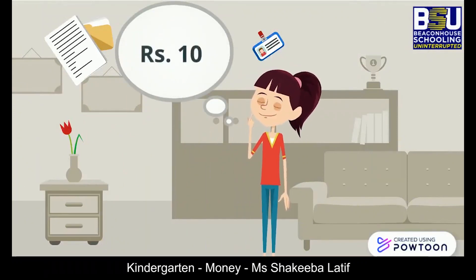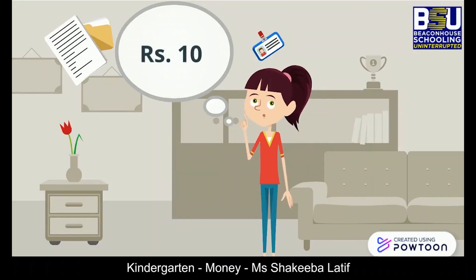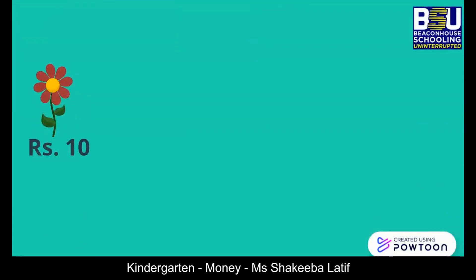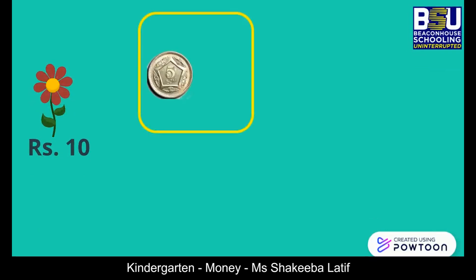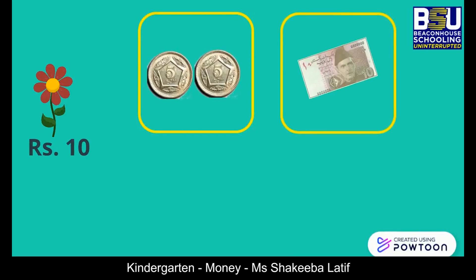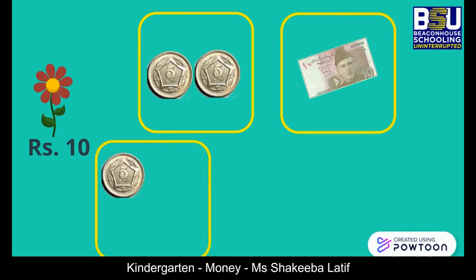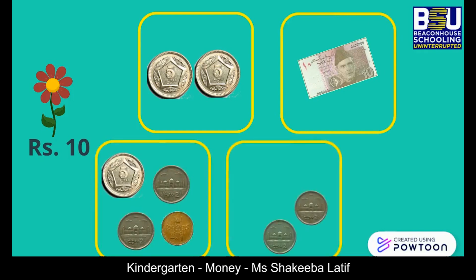She can pay the same amount using different coins and notes. To pay 10 rupees, we can use two 5-rupee coins, as two fives make ten. Or a 10-rupee note. Or a 5-rupee coin, two 2-rupee coins, and one 1-rupee coin. We can count in twos as well — five twos make ten.